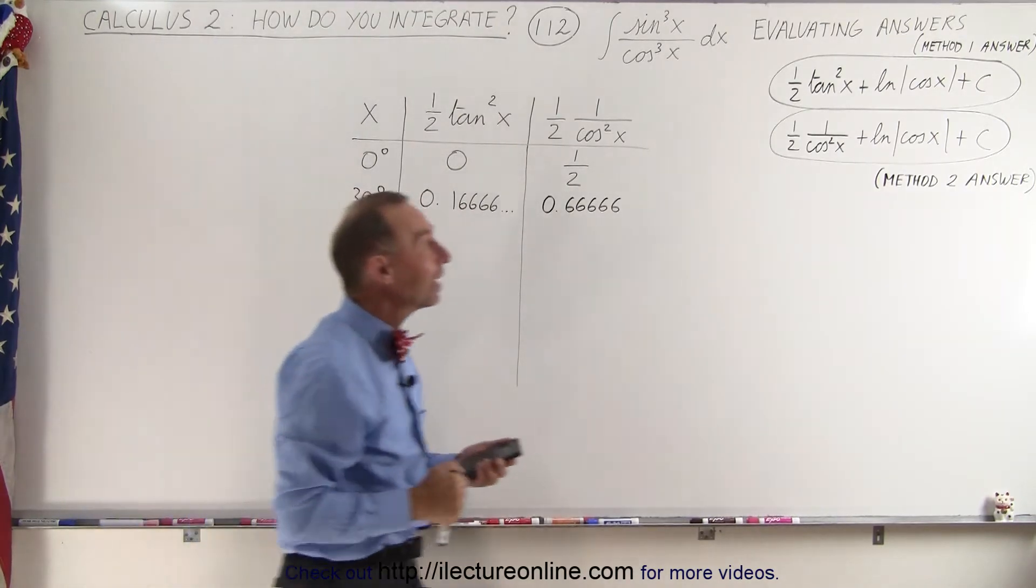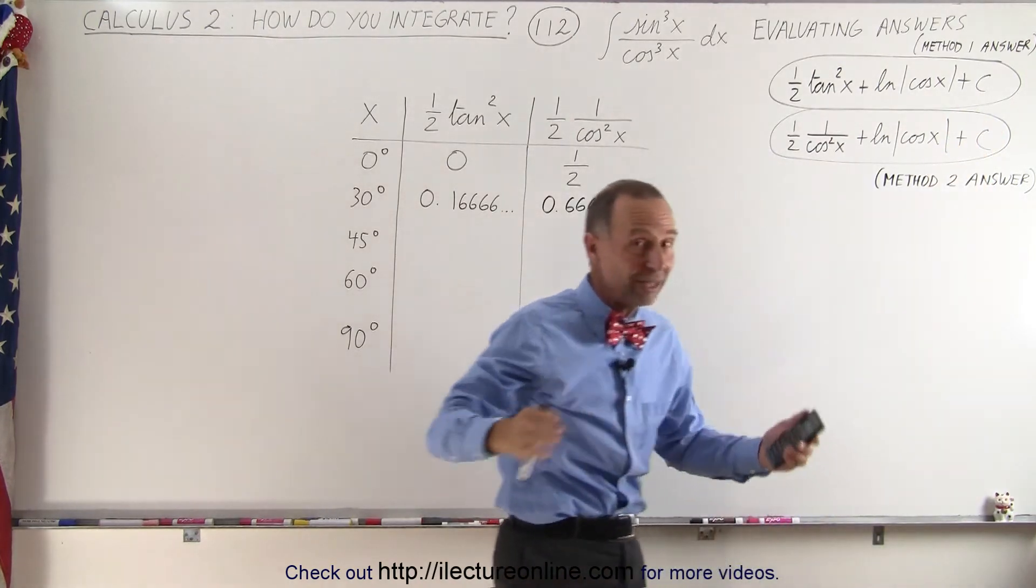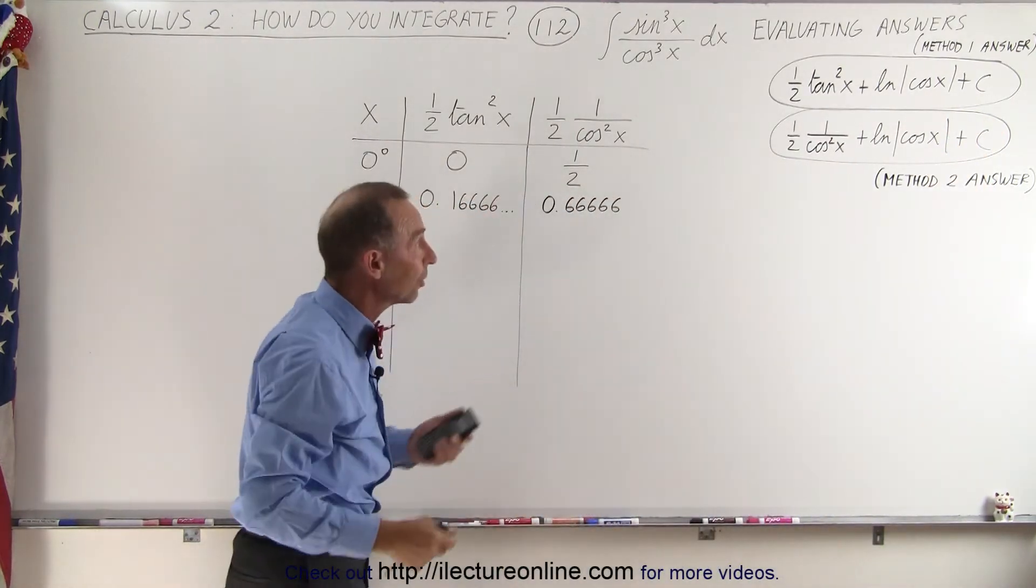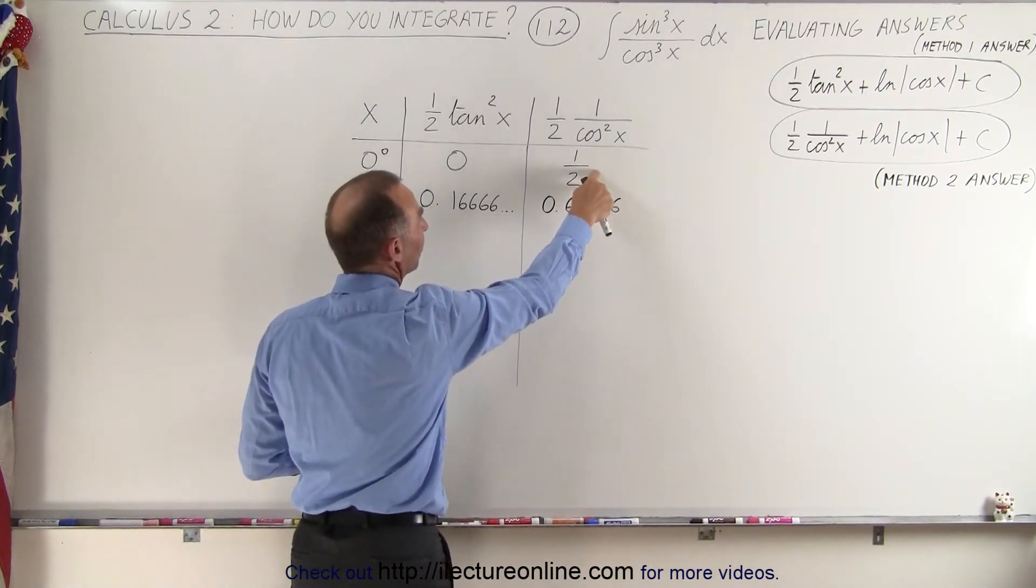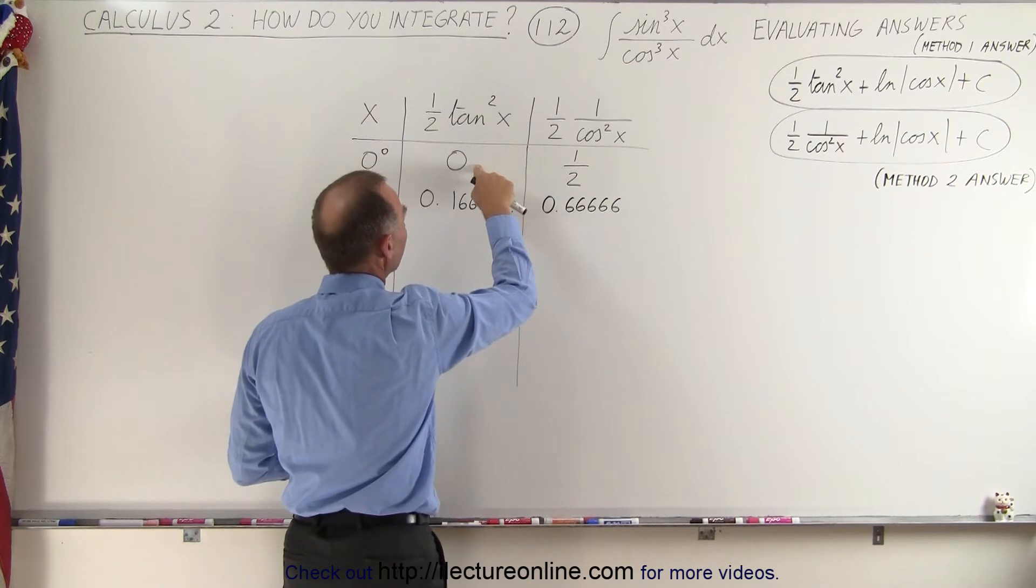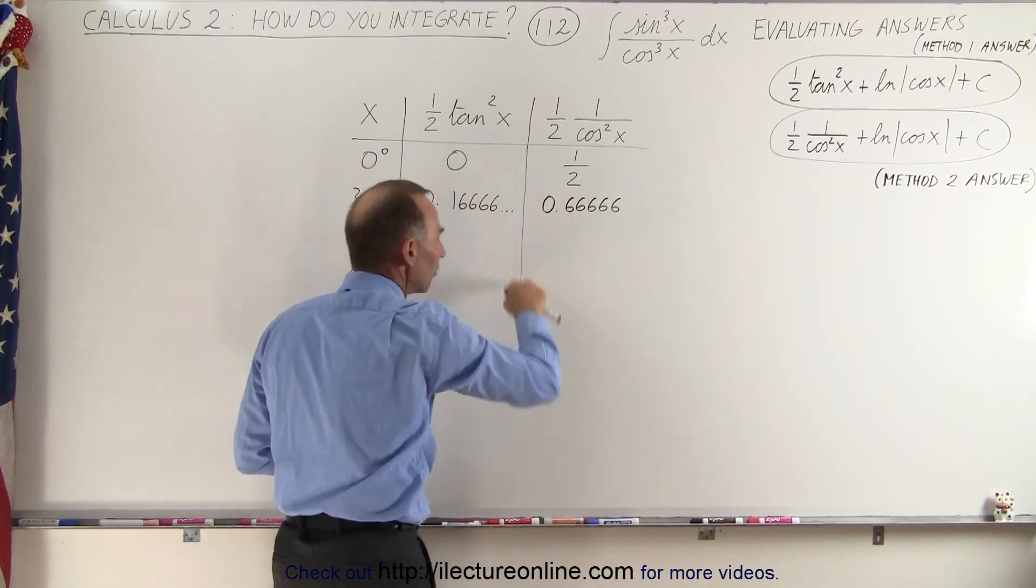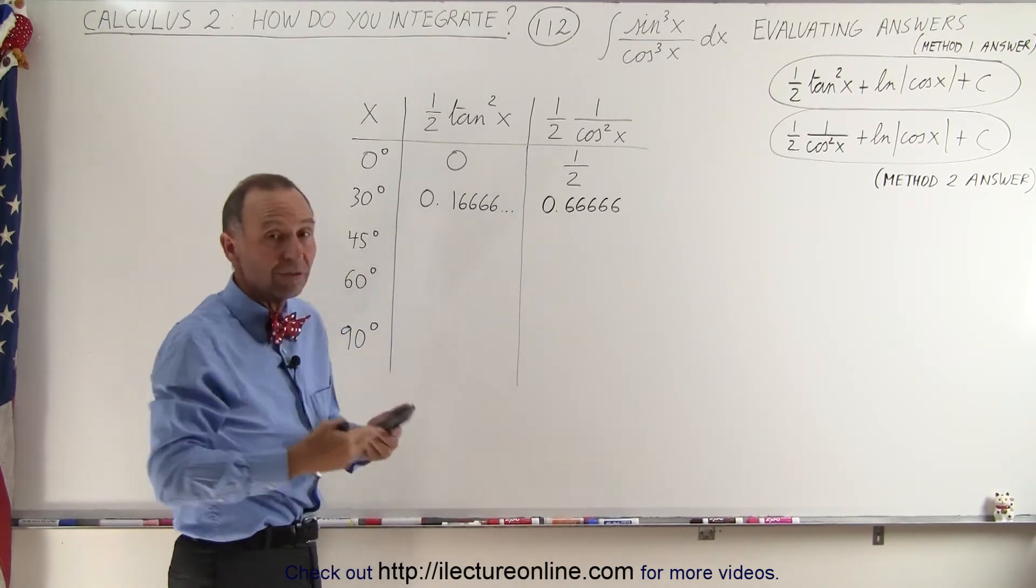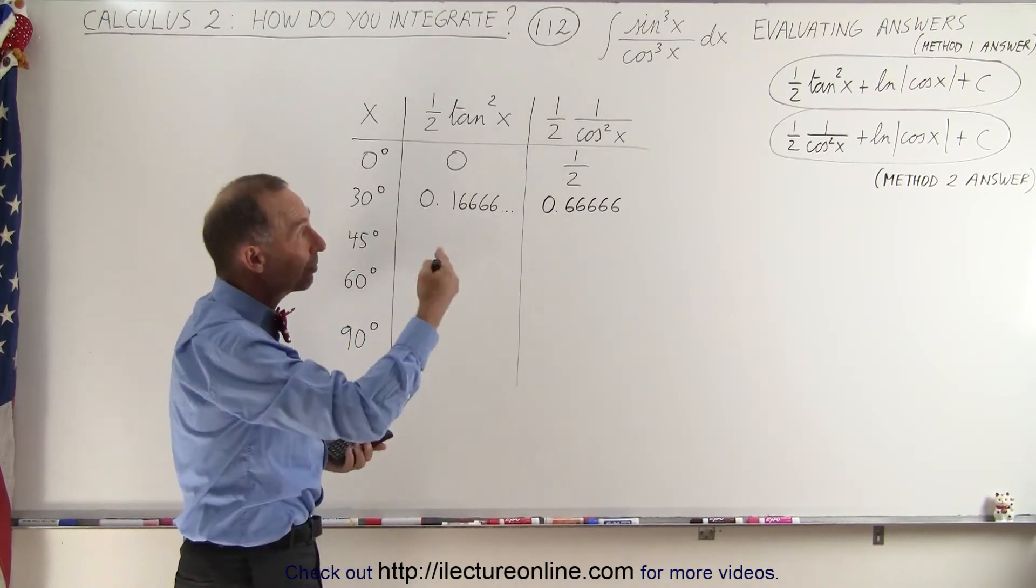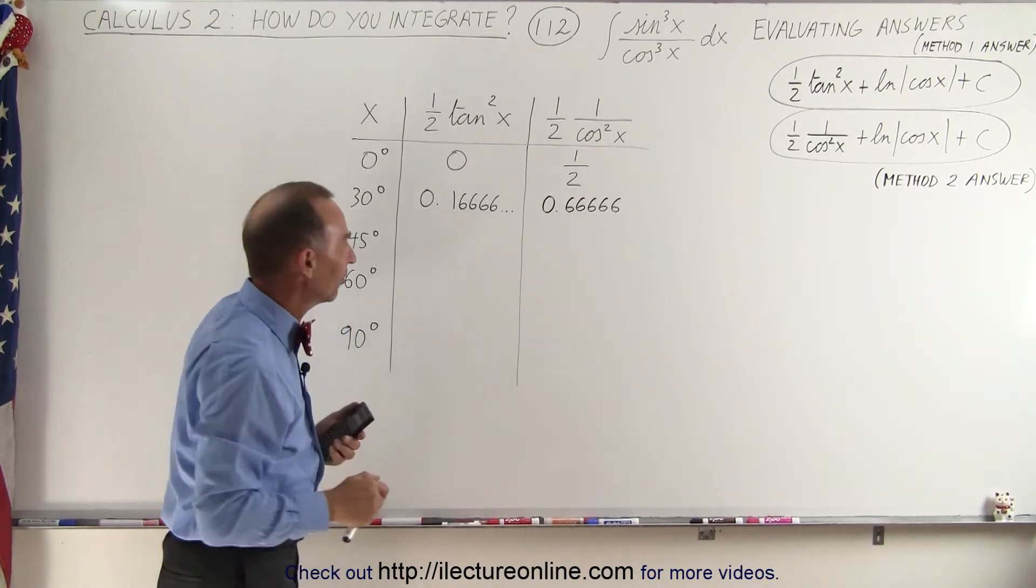Notice that in each case we have a constant of integration, and of course that doesn't have to be the same constant of integration, that can be any constant of integration. And notice that the result here is exactly 0.5 larger than here, and the same over here, 0.5 larger than here. Well, if this continues, then we realize that the only difference is a constant of 0.5, and since we have a constant of integration added to each, then it does become exactly the same answer.